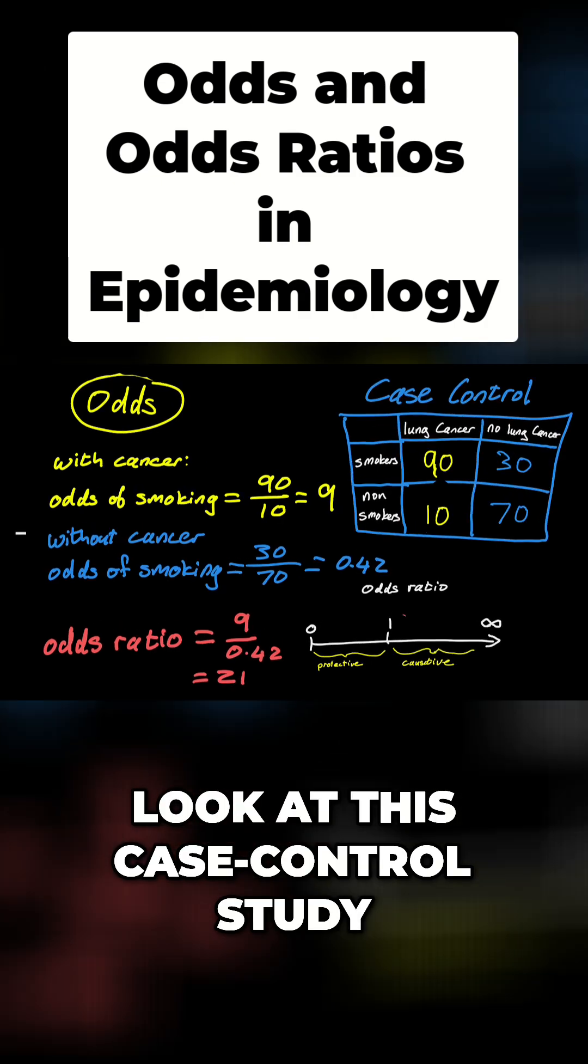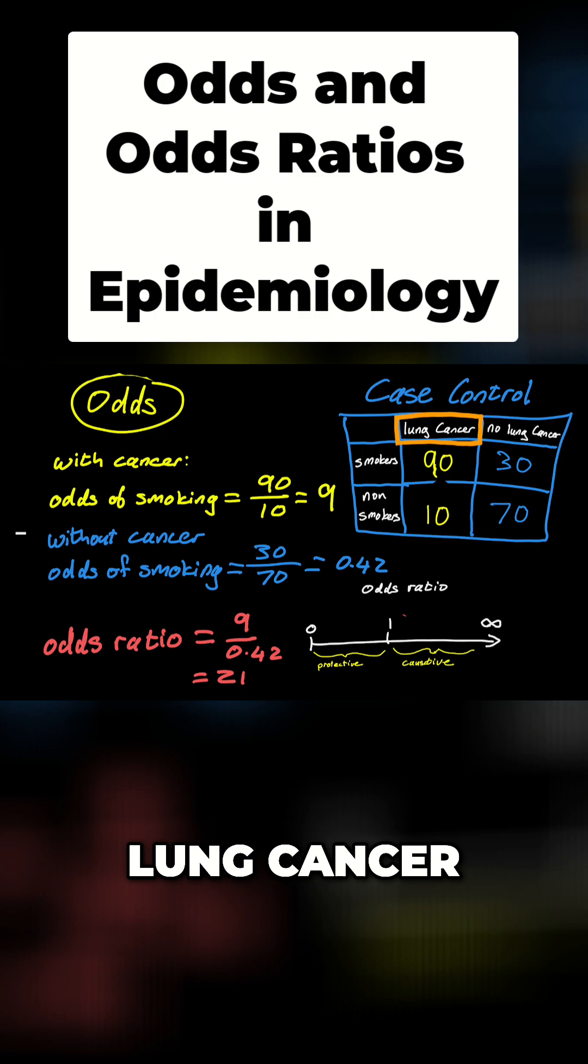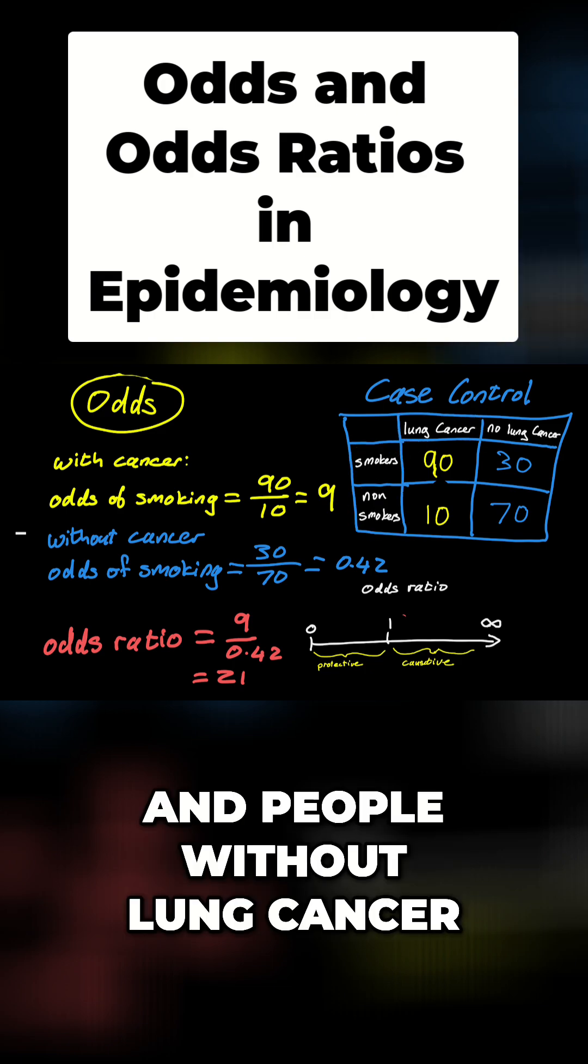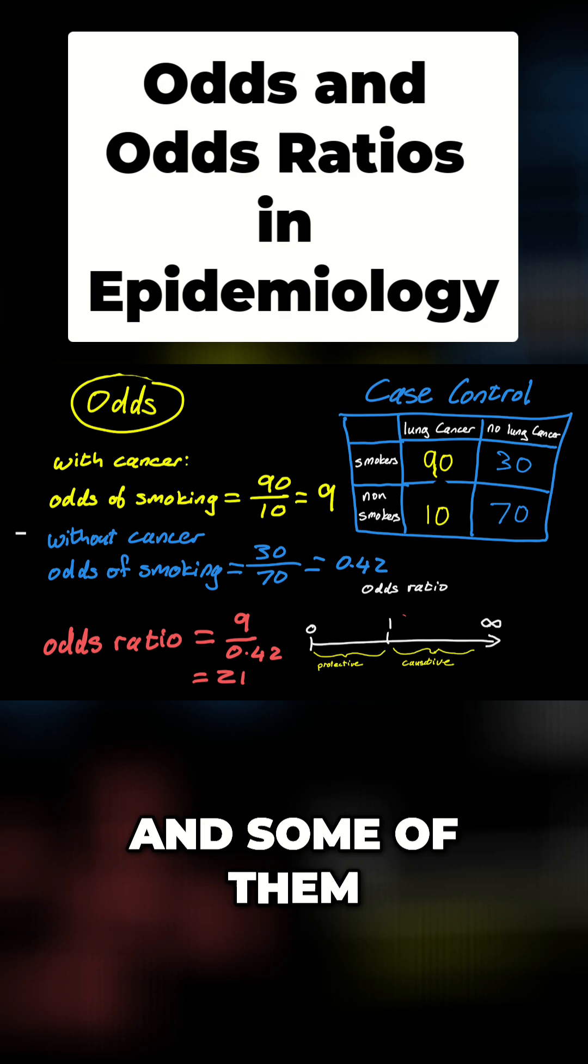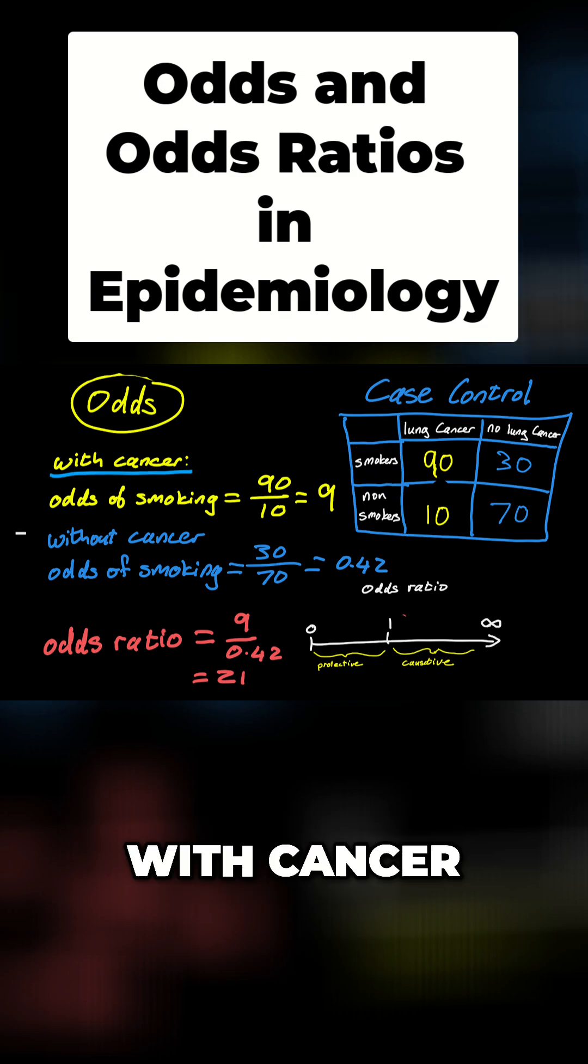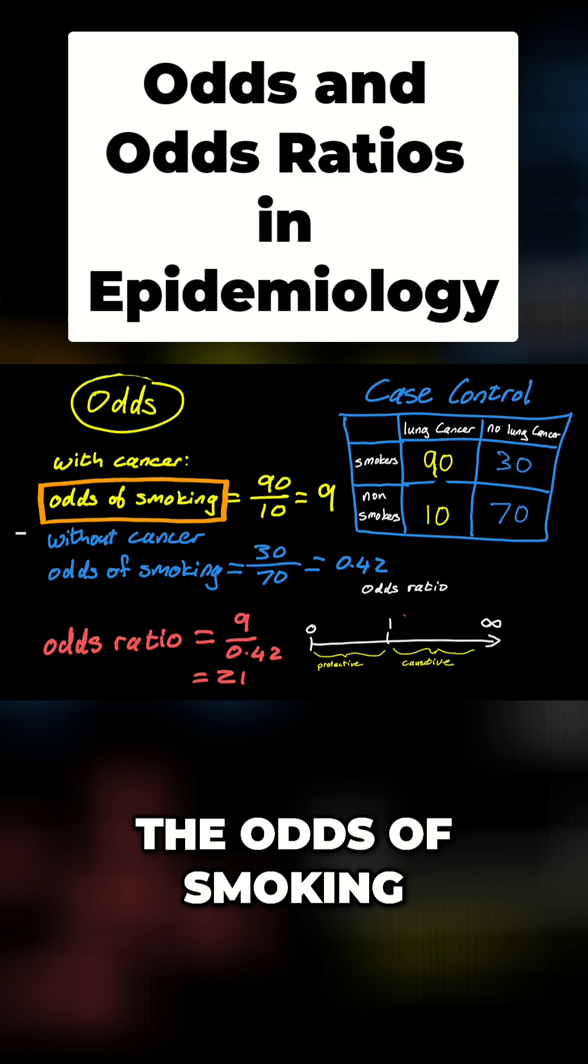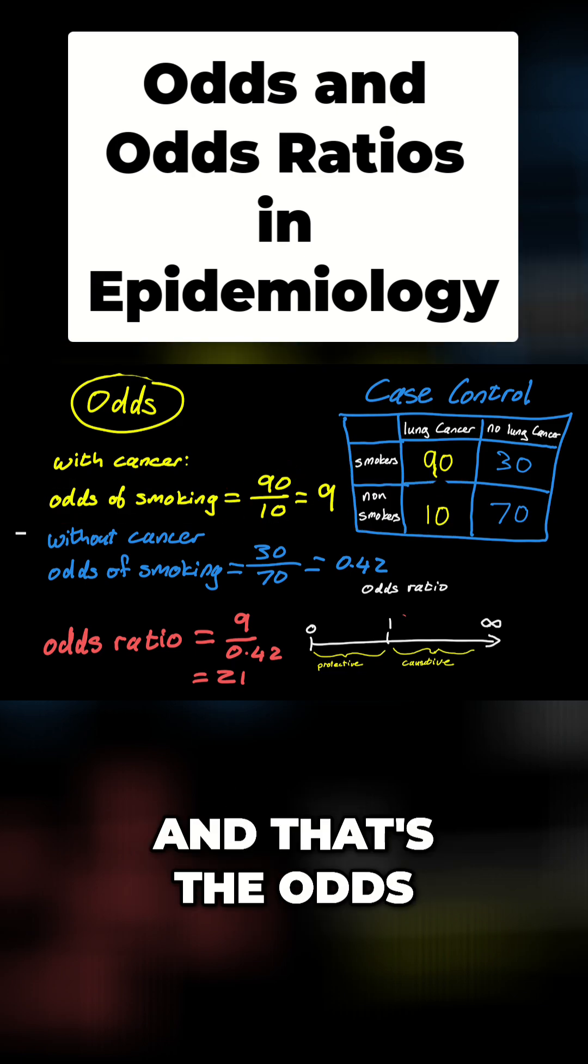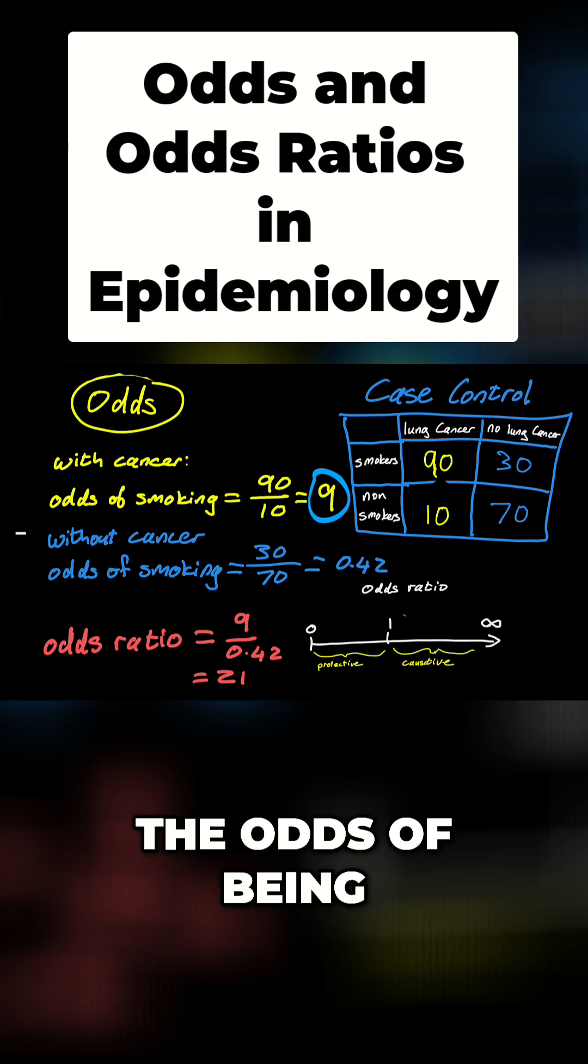So let's have a look at this case control study. We've got people with lung cancer, and some of them were smokers, some of them were not smokers, and people without lung cancer. Some of them were smokers and some of them were not smokers. With cancer, the odds of smoking were 90 over 10, so 90 smokers over 10 non-smokers. The odds were nine. The odds of being a smoker was nine.